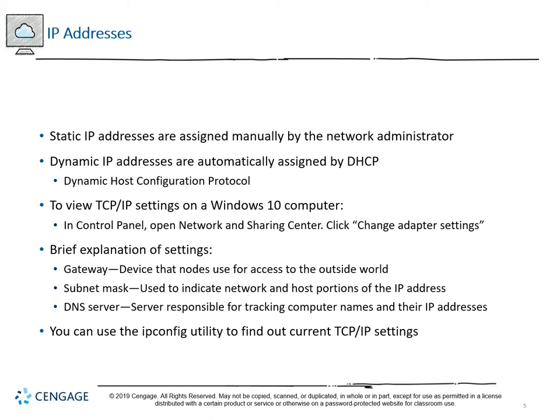Static IP addresses are assigned manually by network administrators, who create a range of addresses considered viable for a particular network. If we don't want to go through that process, we can use Dynamic Host Configuration Protocol — DHCP — which automatically assigns addresses based on rules. Those rules include a particular network range, and we can identify a certain number of hosts. For instance, we may only want 20 hosts connected to the network at one time.